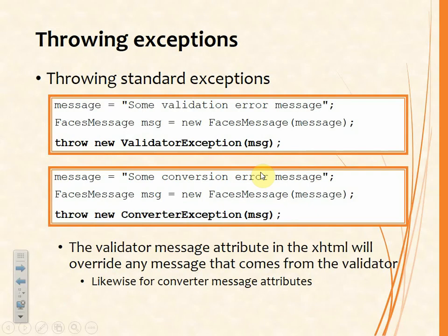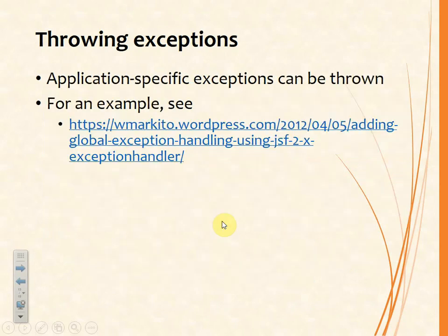One way of generating an error report is to throw an exception. If you throw a standard exception such as a new ValidatorException or a new ConverterException making use of the FacesMessage class, that will cause the message to appear and be displayed on the error screen. But please remember that if you've set any validator message attribute or converter message attribute on any of these tags, that message will override anything that comes out of the conversion or validation processing — it will always override everything else. You can also throw application-specific exceptions, and there is a nice example you can see online at the provided URL.